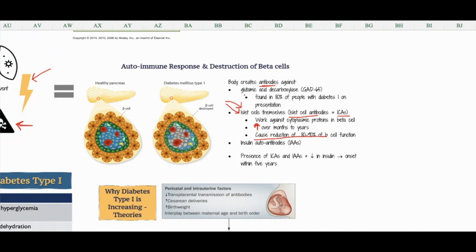They also attack glutamic acid decarboxylase, or GAD-65. This is found in 80% of people with diabetes type 1 on presentation. When they do blood work, they find antibodies to this GAD-65 in the blood. Same thing with ICAs - they find those in the blood as well.